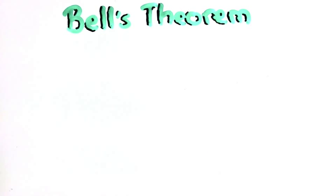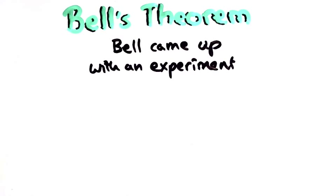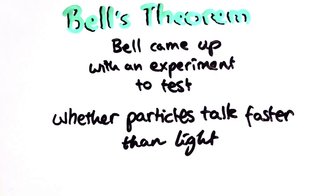So finally, we get to the point. What is Bell's theorem? Bell came up with an experiment that would give different results in a world where particles can talk faster than light, and in one where they couldn't.